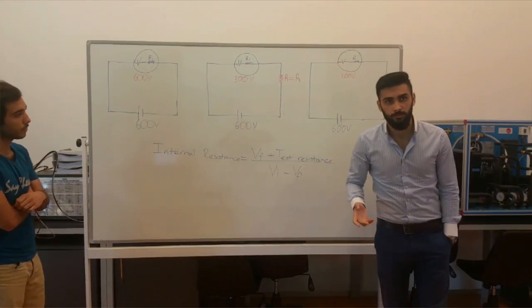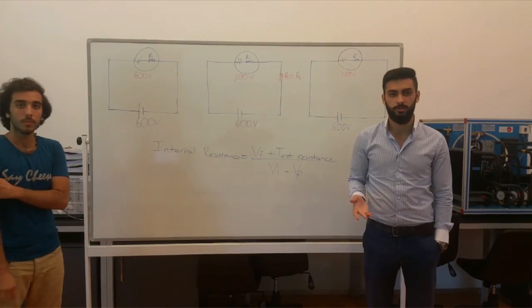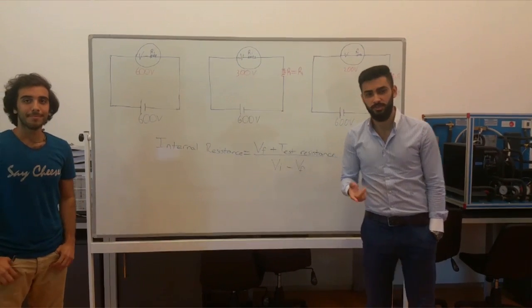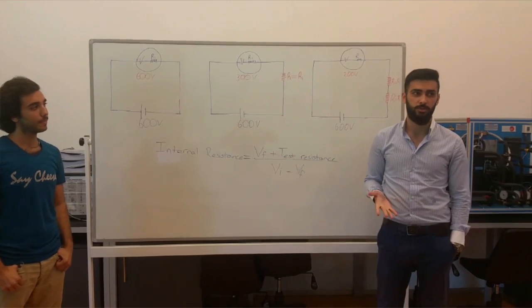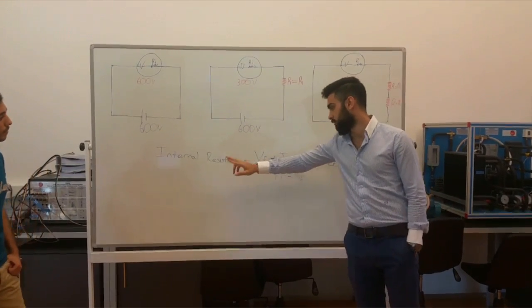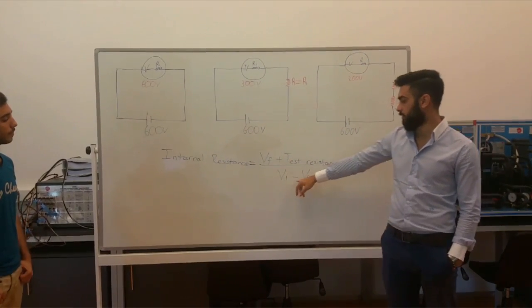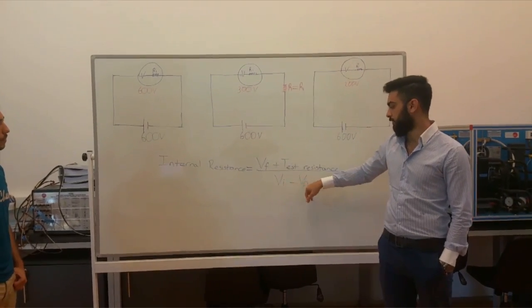With this principle, multimeter's limits can be extended according to the resistors. For applying that principle, the multimeter's internal resistors must be known or must be learned with this equation: internal resistance equals V final plus test resistors over V initial minus V final.